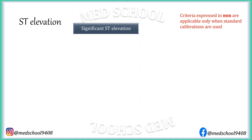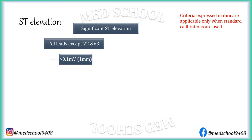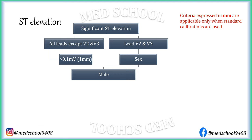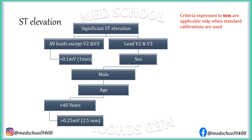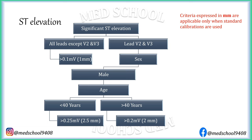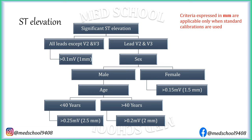Significance of ST elevation depends on which lead it is present in. In all leads except V2 and V3, ST elevation more than 0.1 mV (1 mm) is considered significant. For leads V2 and V3, the patient's gender is considered. In males under 40 years, ST elevation more than 0.25 mV (2.5 mm) is significant; if age is over 40, more than 0.2 mV (2 mm) is significant — younger patients need greater ST elevation to confirm MI. In females, ST elevation more than 0.15 mV (1.5 mm) in V2 and V3 is significant.